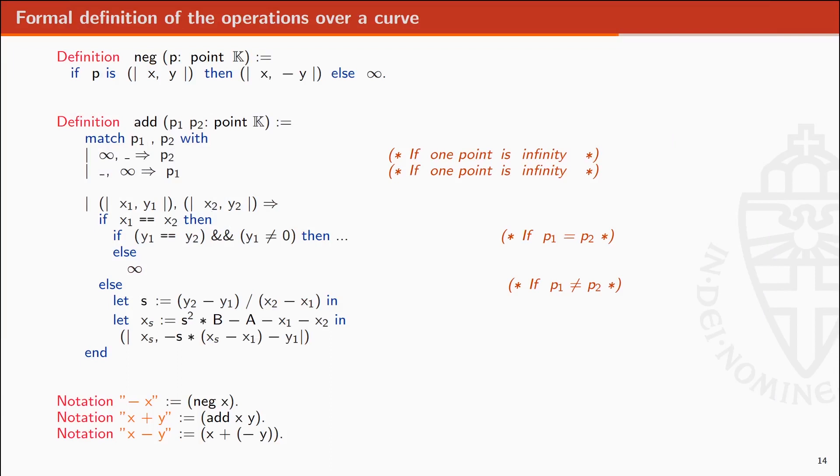Operations on elliptic curves are similarly defined using geometric formulas. Negation is by taking the reflection over the X-axis. Addition is the negation of the third intersection point with the curve. With this operation, we prove that we are working on an associative finite group.